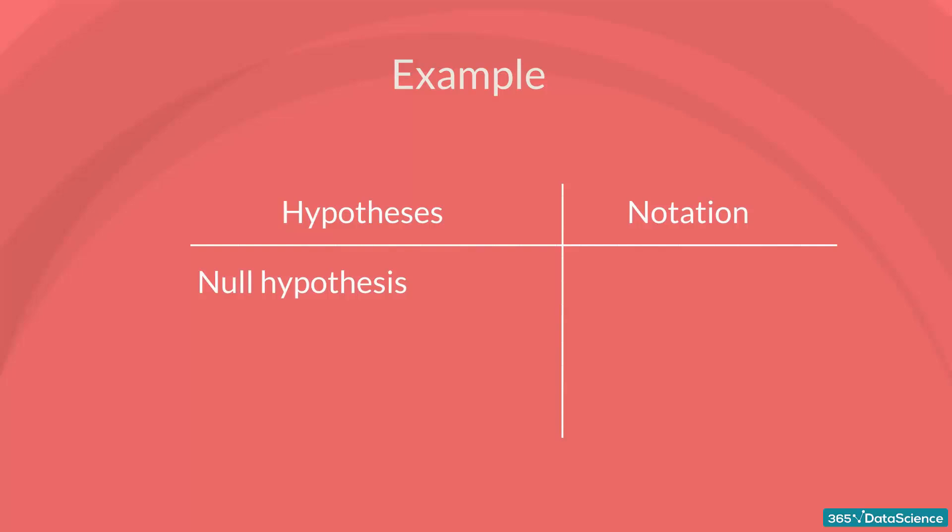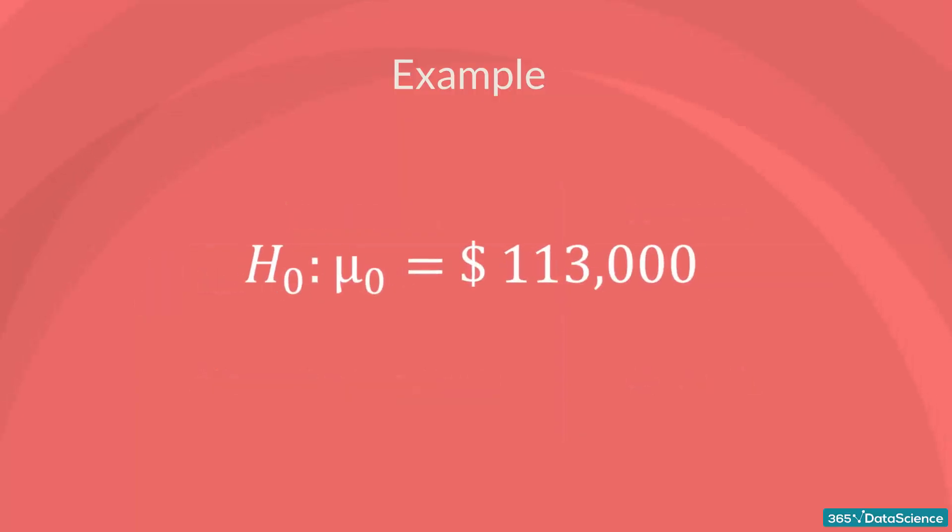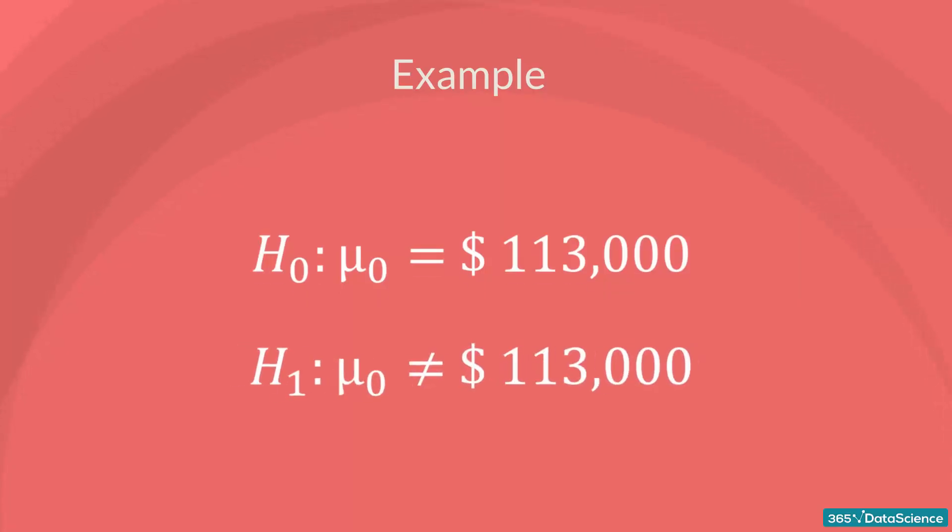The null hypothesis, denoted H0, and the alternative hypothesis, denoted H1 or HA. The null hypothesis is the one to be tested, and the alternative is everything else. In our example, the null hypothesis would be: The mean data scientist salary is $113,000, while the alternative: The mean data scientist salary is not $113,000.